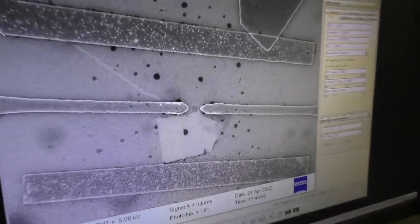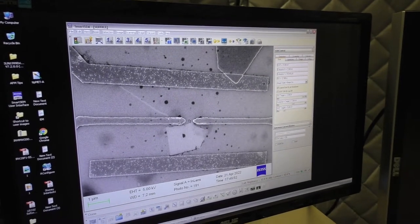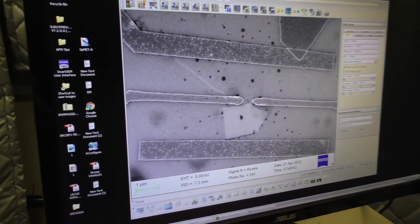We can also slow down the scanning speed. Here we can clearly see how the electron beam spots scans over the sample surface line by line.